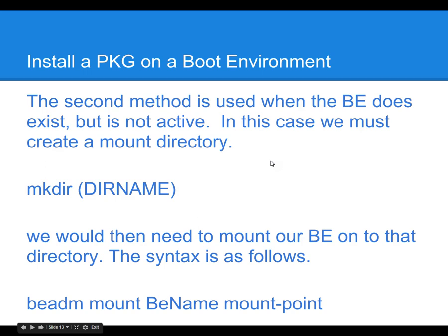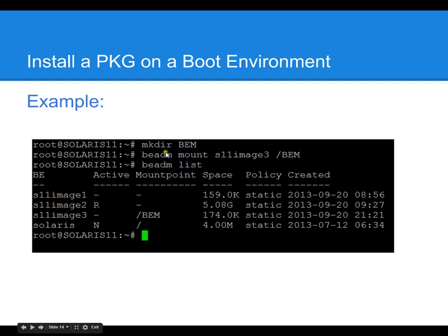In the situation where the boot environment already exists, you first have to mount it in order to install a package. You would type mkdir followed by the directory name, then use beadm mount with the name of the boot environment and the mount point. Here's an example: mkdir creating a directory called BEM, then beadm mount Solaris 11 image 3 /BEM, which is our mount point. When we do a beadm list, we can see that the new boot environment Solaris 11 image 3 has been mounted.